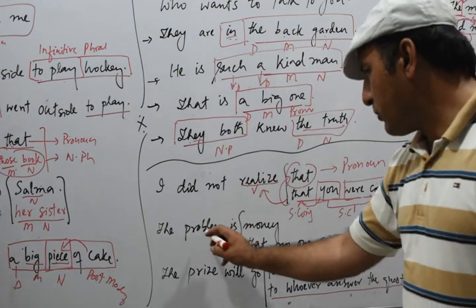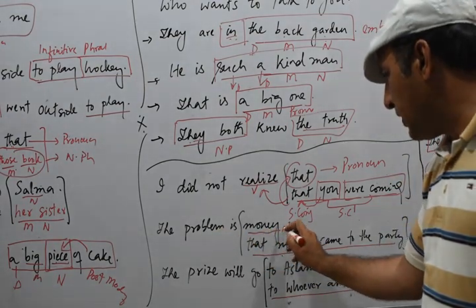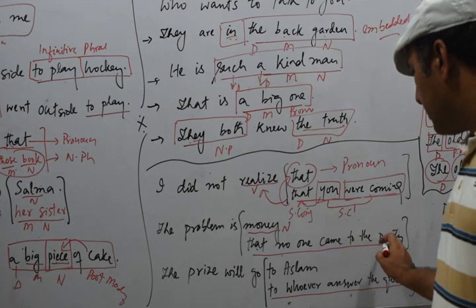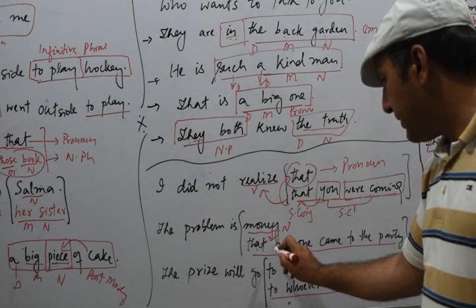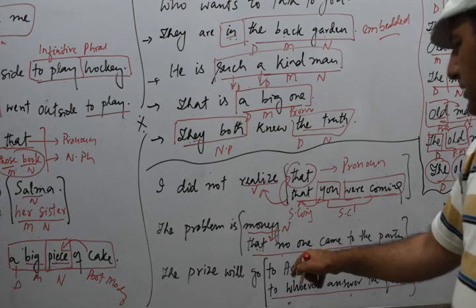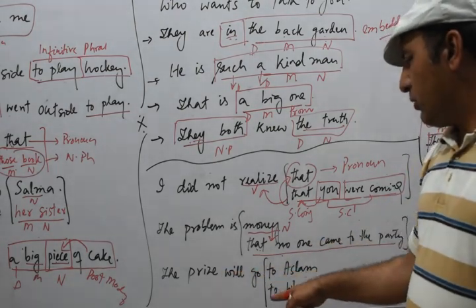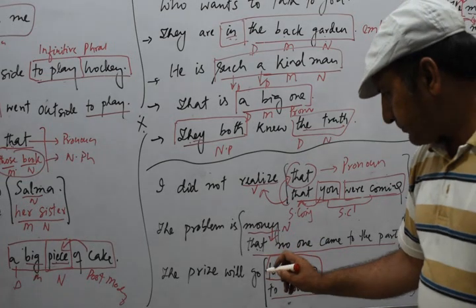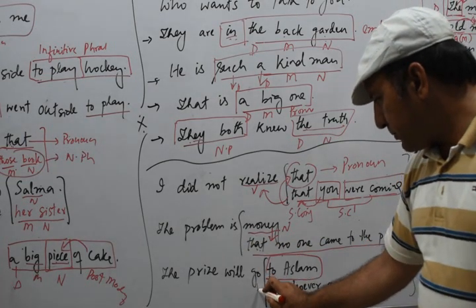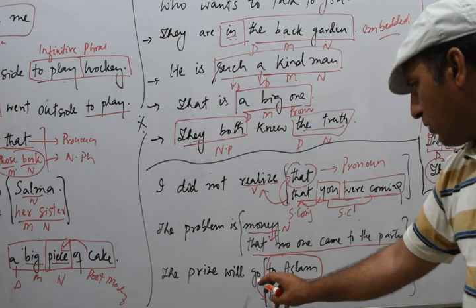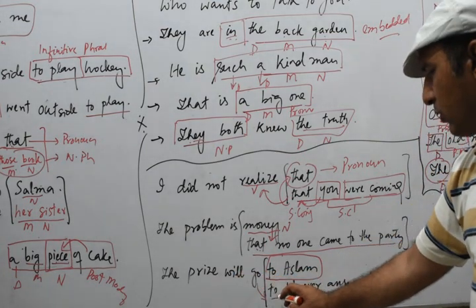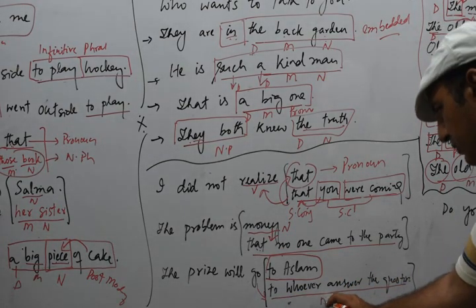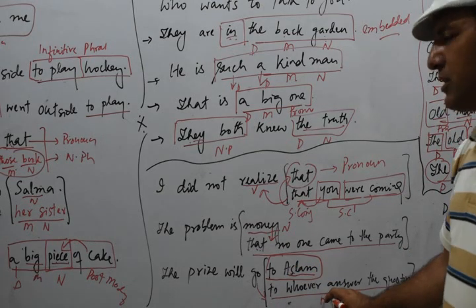The next example: 'The problem is money' — 'money' is a noun. This noun is replaced by the noun clause 'that no one came to the party.' So 'the problem is that no one came to the party.' Then: 'The prize will go to Asla.' Here 'Asla' is replaced by the noun clause 'to whoever answers the question.' So 'to whoever answers the question' is a noun clause because it has replaced the noun.